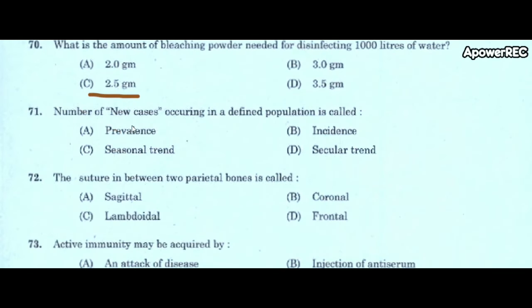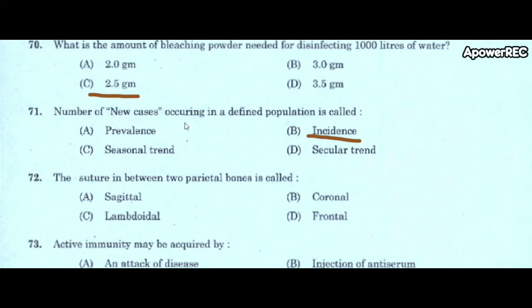Next question: number of new cases occurring in a defined population is called A) prevalence, B) incidence, C) seasonal trend, D) secular trend. Correct answer is incidence. Number of new cases occurring in a defined population is called incidence.